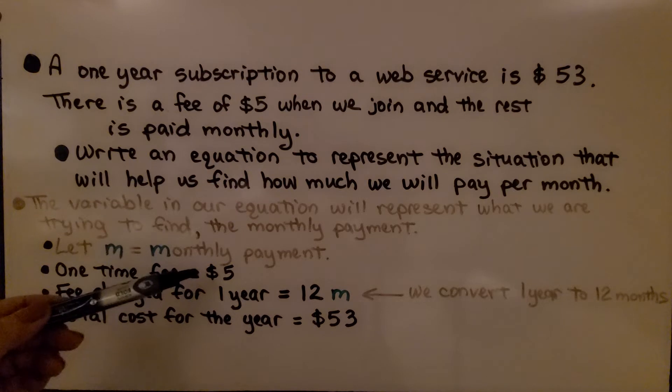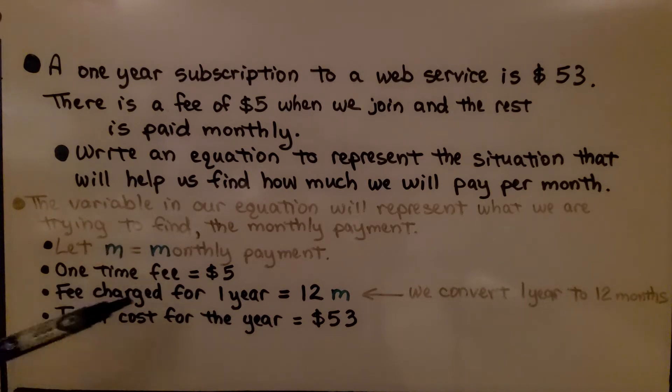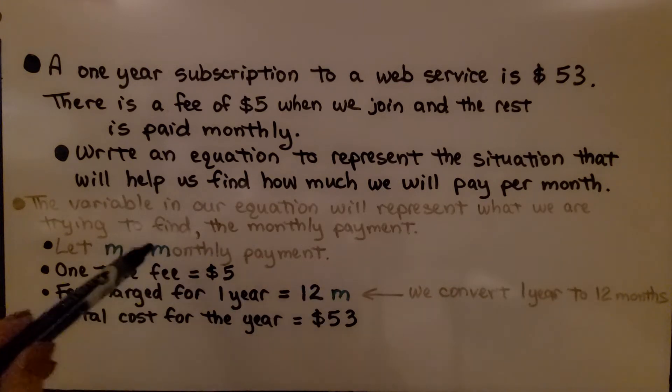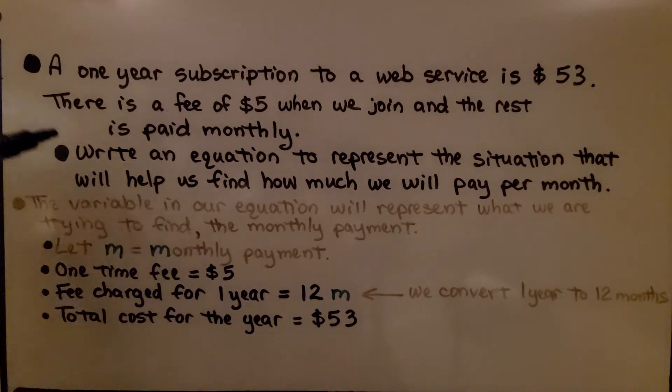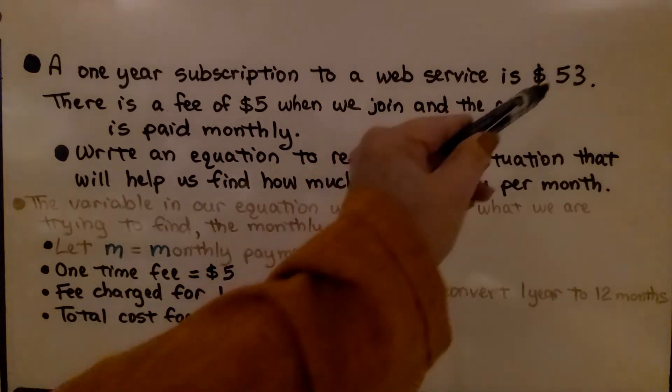The one-time fee is $5. The fee charged for one year is going to be 12 times M for 12 times the monthly payment. We convert that one year to 12 months because it's asking about a monthly payment. The total cost for the year is $53.